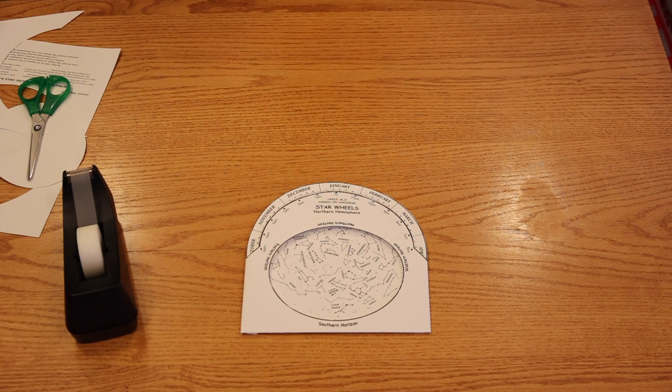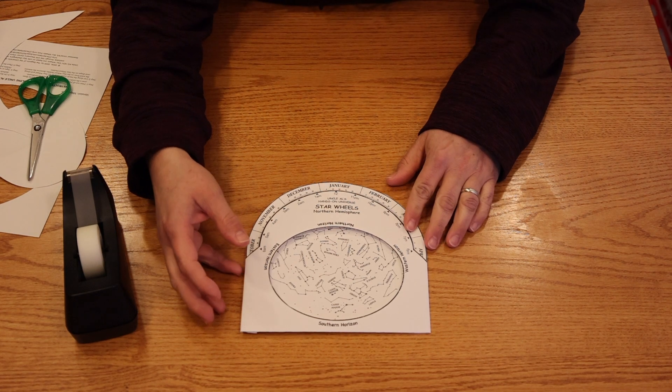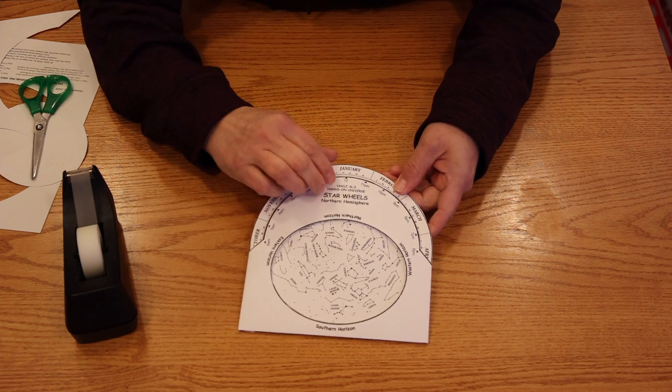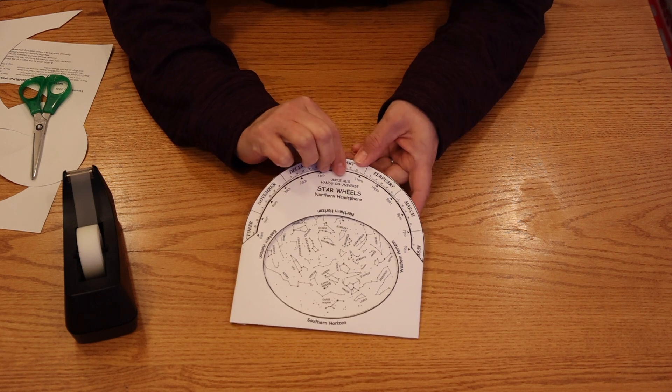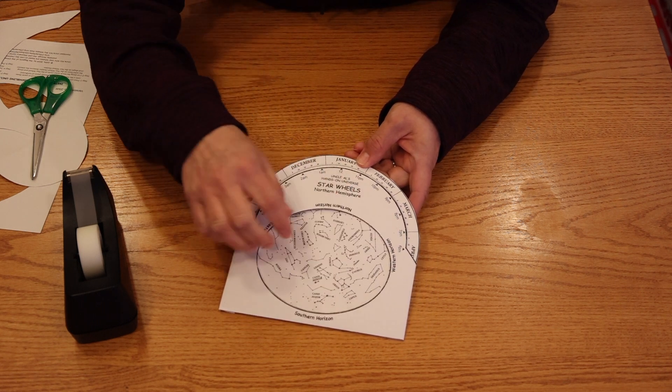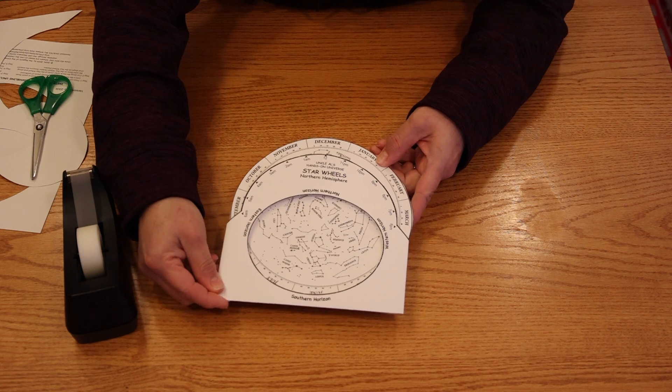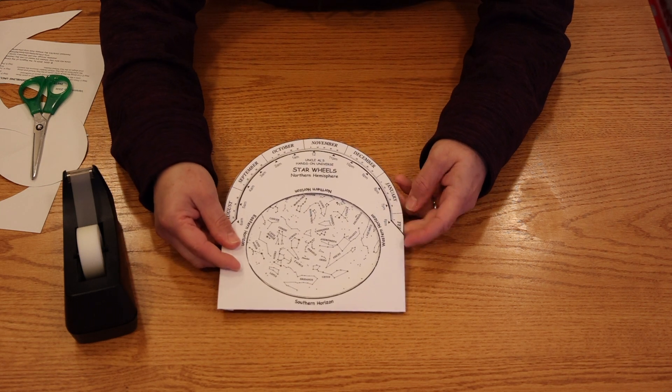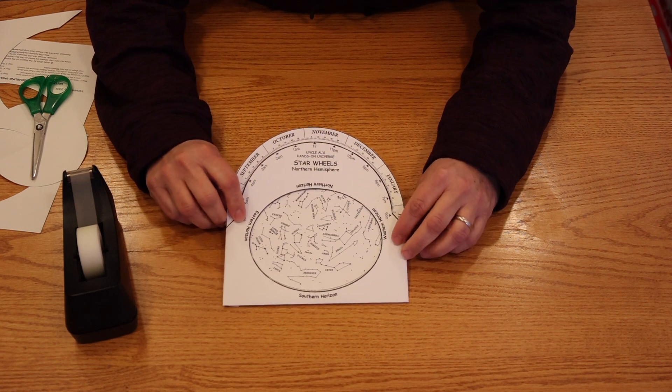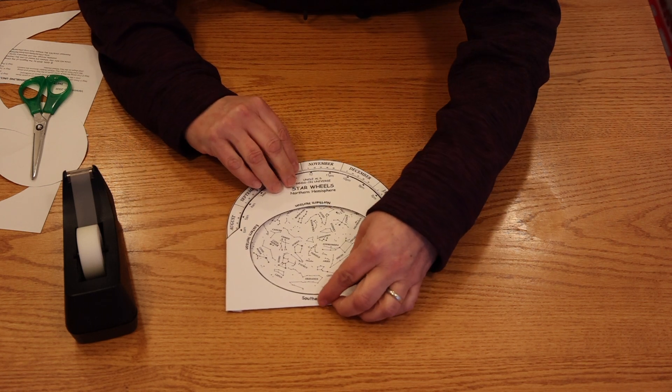Now let's figure out how to use it. Using a planisphere is super easy. All you got to do is find the date that you're looking at the sky on the star wheel. Then turn the star wheel until that date lines up with the time that you're going to go outside and look at the sky. In this case, we set it for January 25th at 7pm.